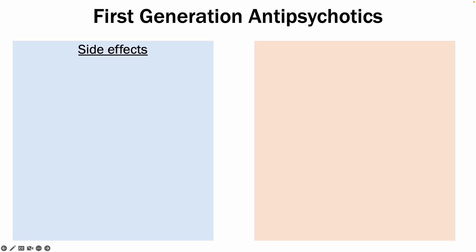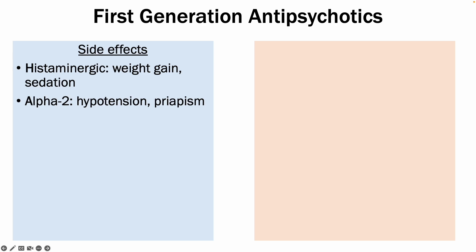In terms of important side effects: the histaminergic side effects include weight gain and sedation, and the alpha-2 side effects include hypertension and priapism. The muscarinic side effects are dry mouth. The mnemonic to remember for first-generation antipsychotics is that they are anti-HAM — anti-histaminergic, anti-alpha-2, and anti-muscarinic.